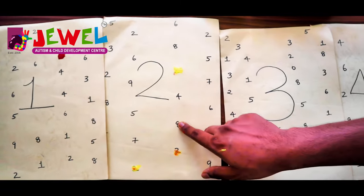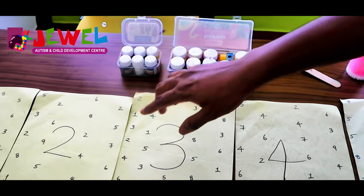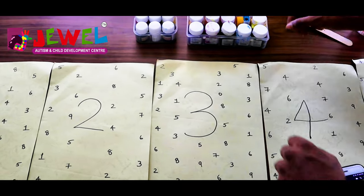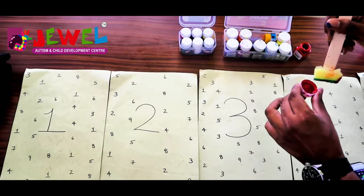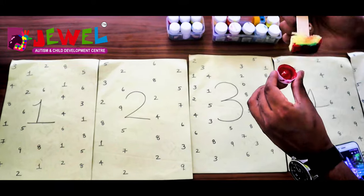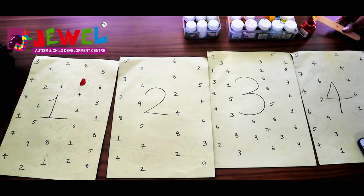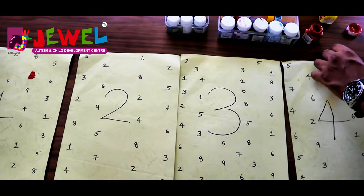Here, the child is asked to paint the target number and surrounding random numbers. So the child is asked to paint the target number one. The next target number is two.